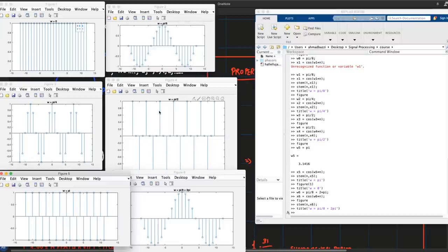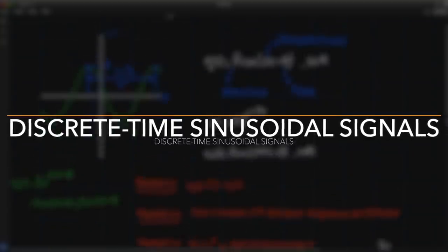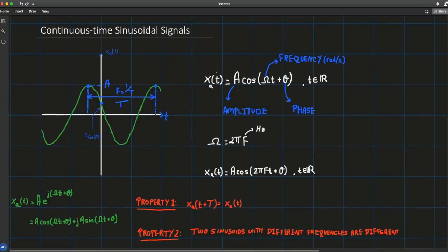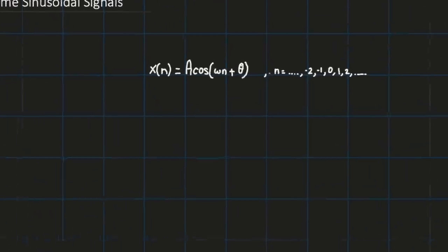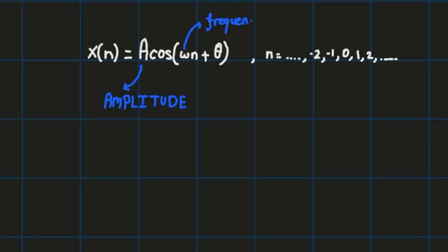So without further ado, let's get started. Unlike continuous time sinusoidal signals where the independent variable is a continuous one, a discrete time sinusoidal signal is also characterized using three parameters: the amplitude, the frequency or angular frequency measured in radians per sample, and the phase measured in radians.